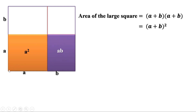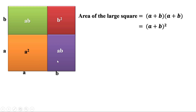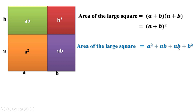The second rectangle also has sides a and b, so its area is ab. The remaining part is a square with side b, so its area is b². Adding all four parts: area of large square = a² + ab + ab + b². Since ab + ab = 2ab, this simplifies to a² + 2ab + b².